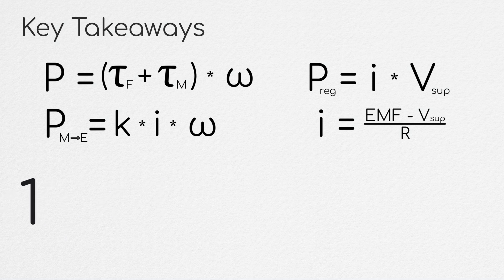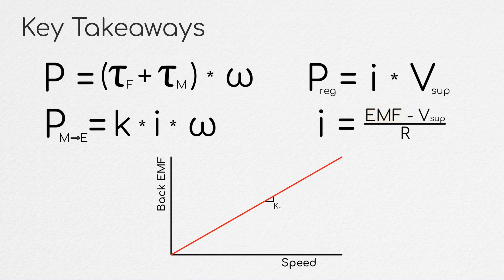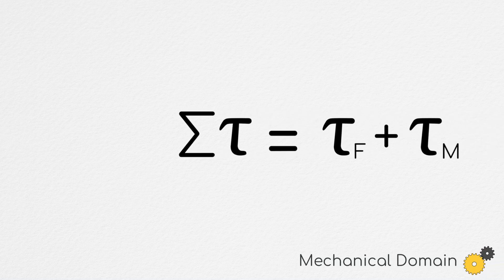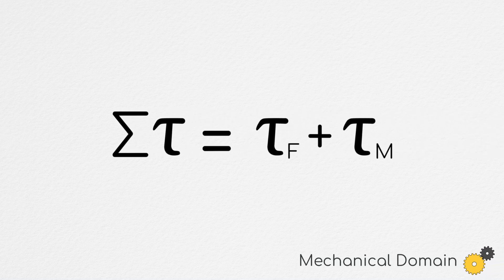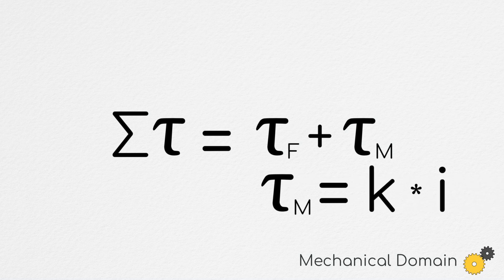We also notice that for a fixed supply voltage, our current flowing in the electrical system is strictly a function of the back EMF and thus the rotation rate of the motor. The implications of this are twofold. First, on the mechanical side, the electromechanical torque that the motor is applying back on the system is proportional to the current running through the motor.